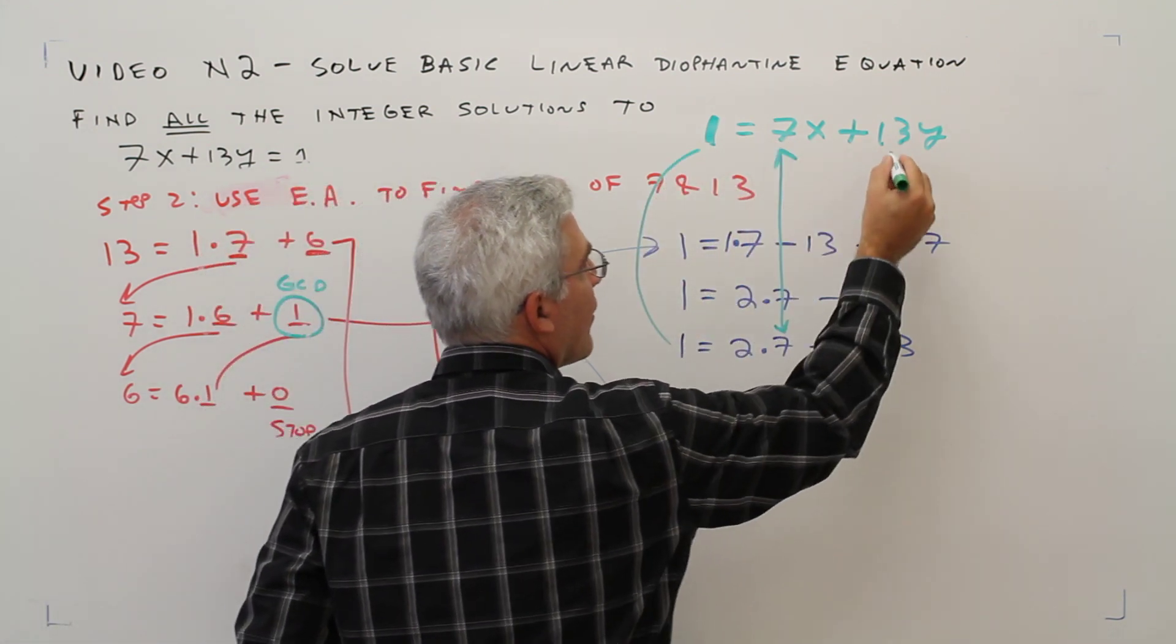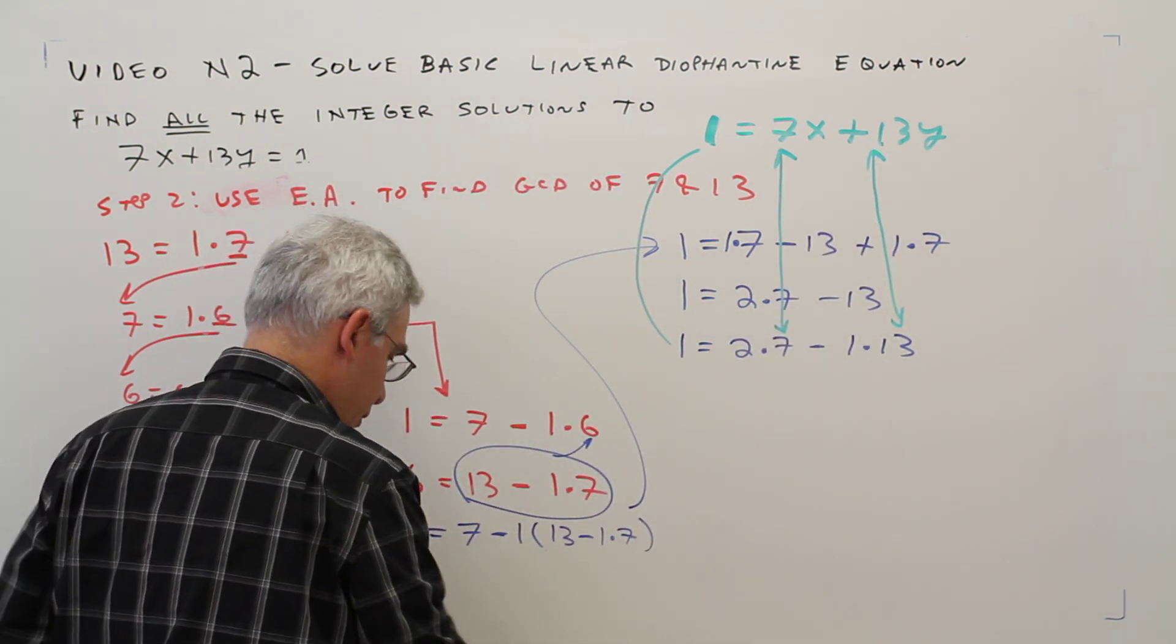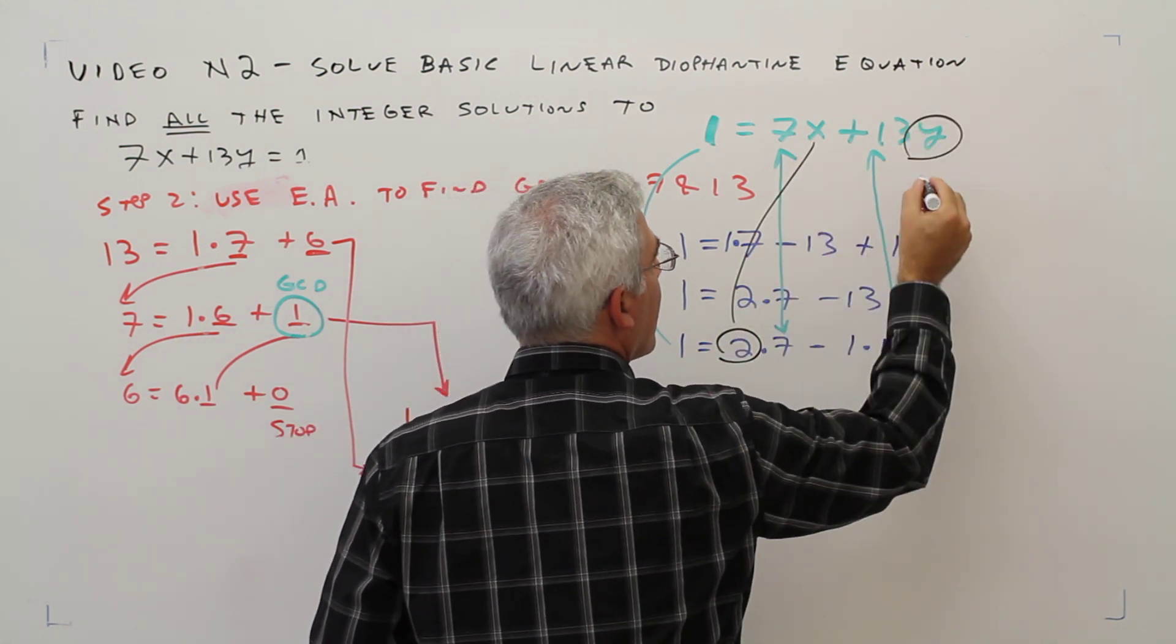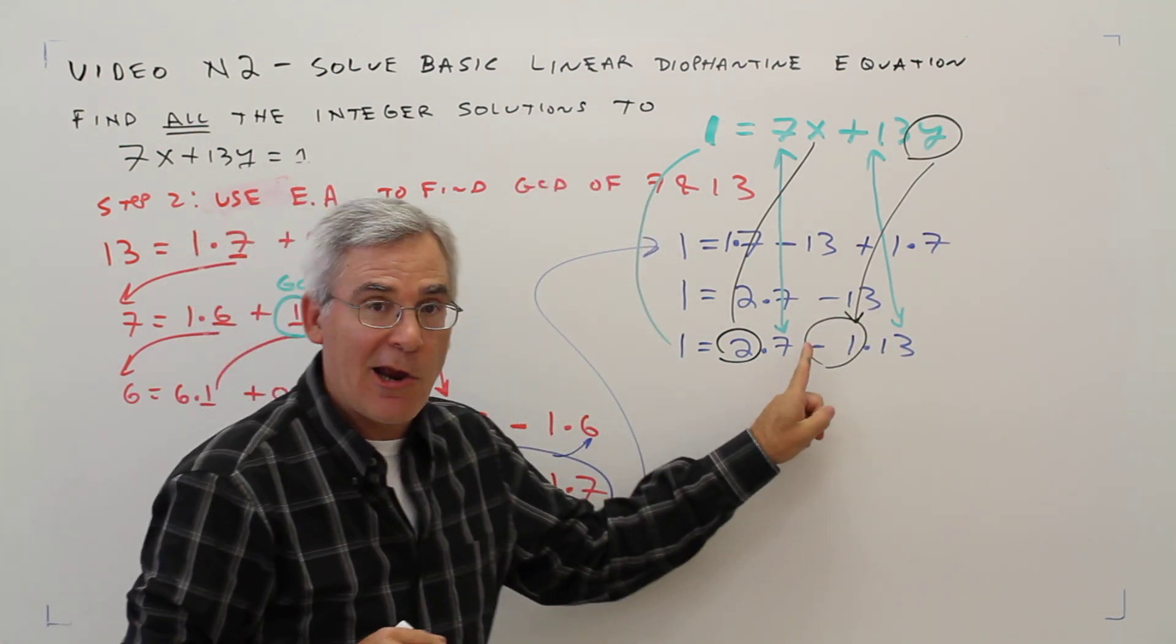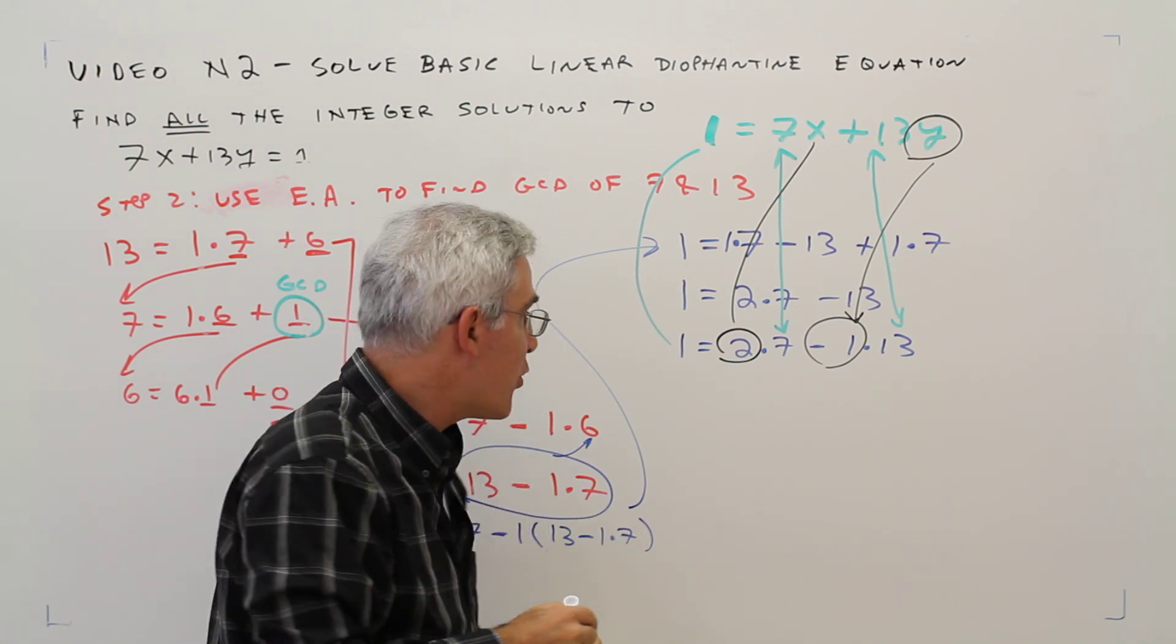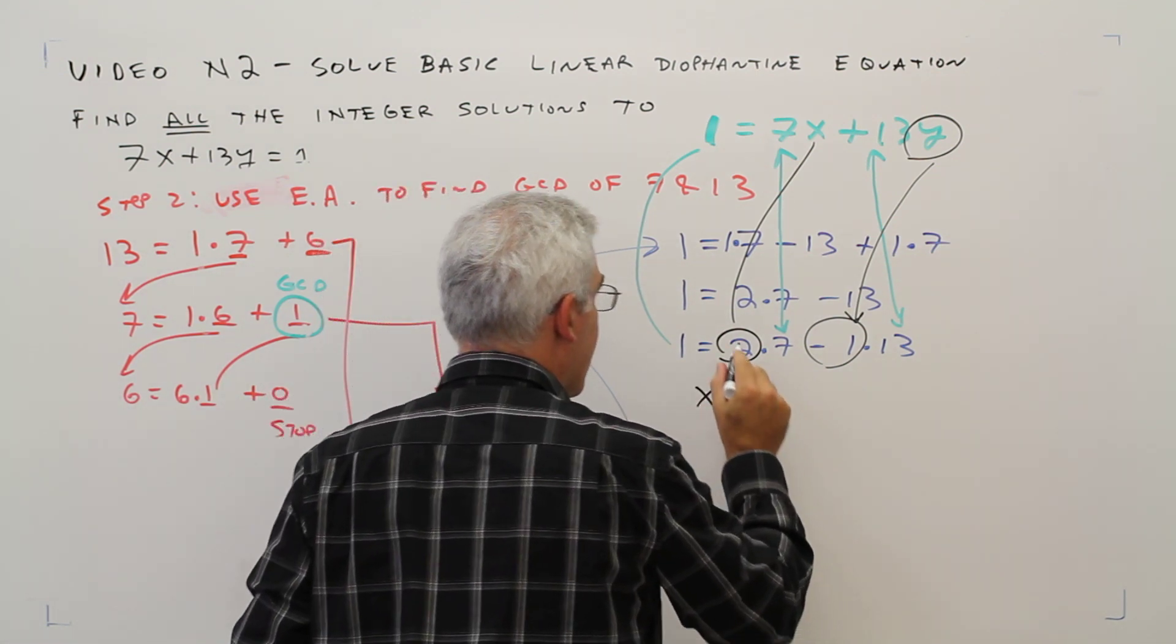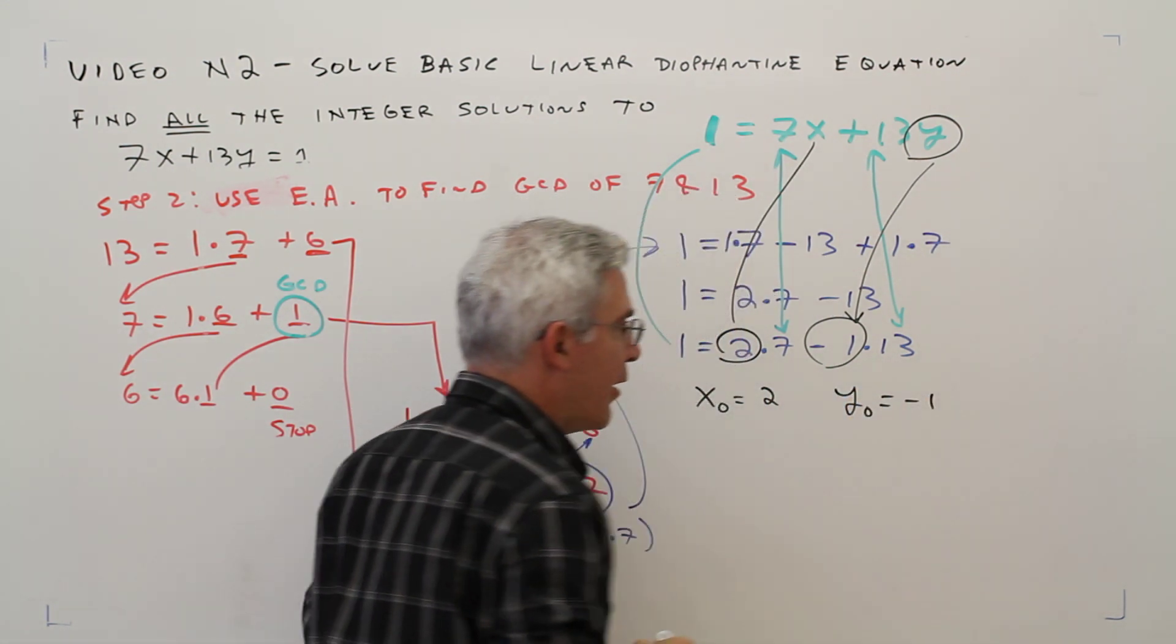And I've got the 13s, which means that this is the x and this is the y. Be careful, I circled the negative sign. So I've got a specific solution of x naught equals 2 and y naught equals negative 1.